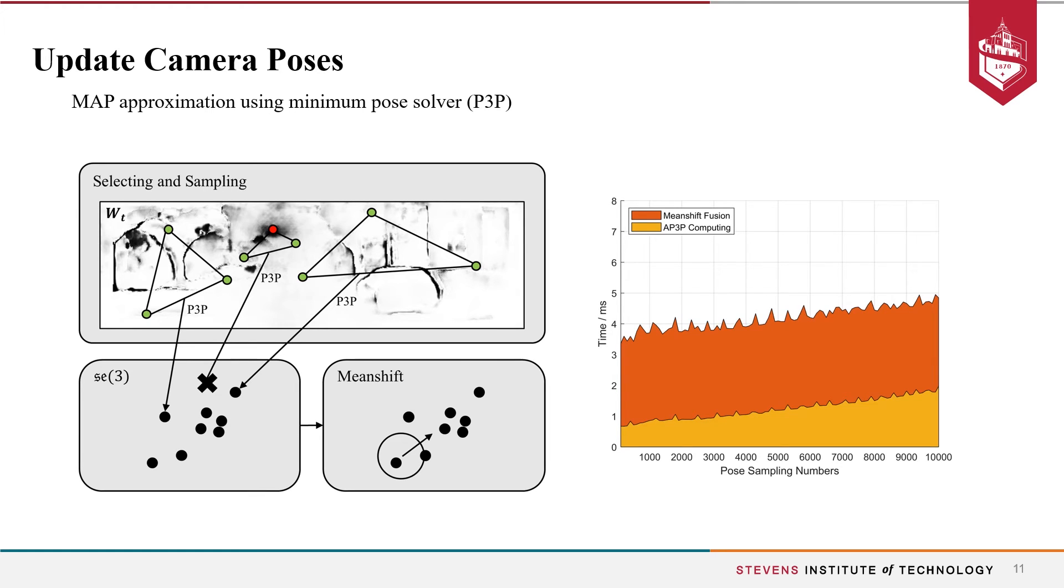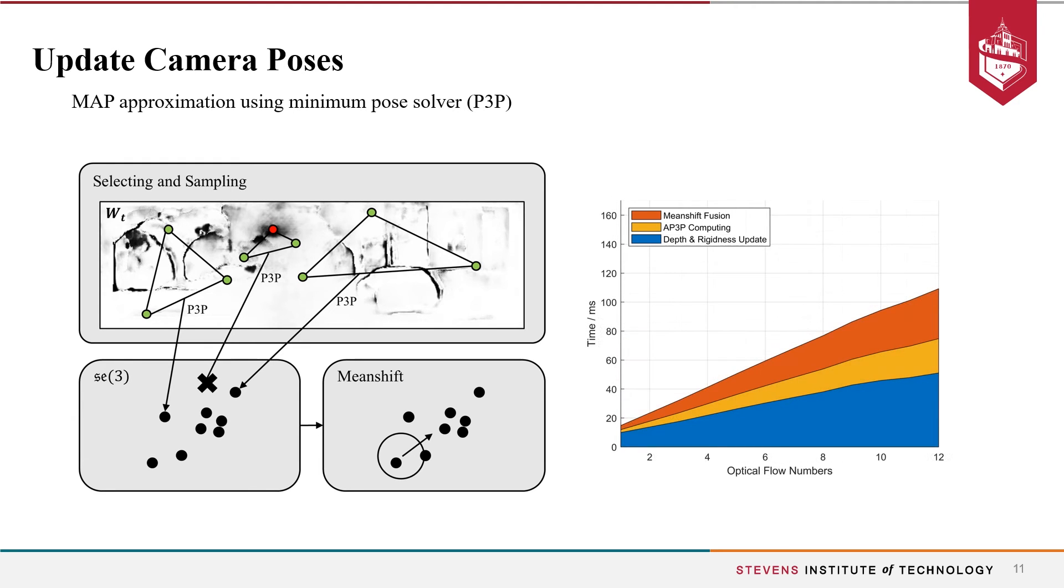Plus the time for updating depth and rigidness maps, the total time for each updating cycle is as following. In our experiments, we take 6 frames for each batch, and our method usually converges in 2 to 5 iterations.